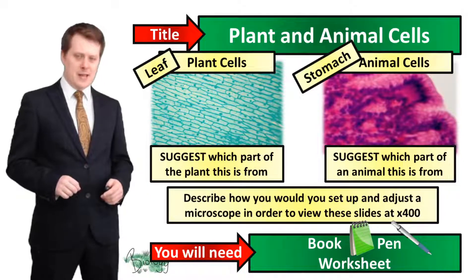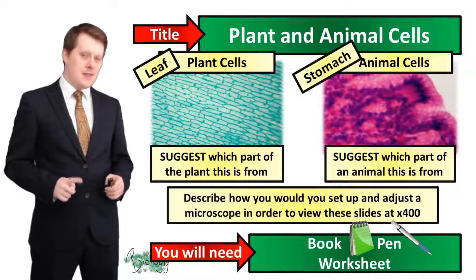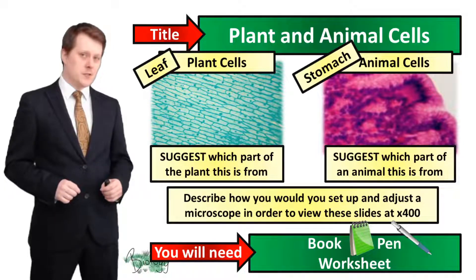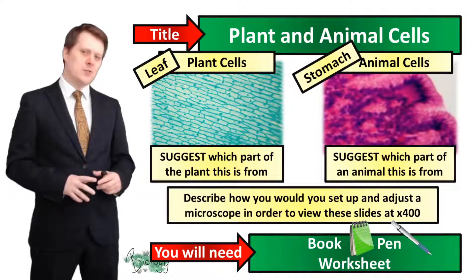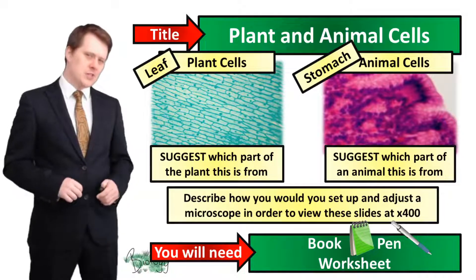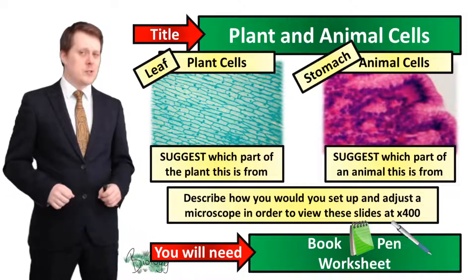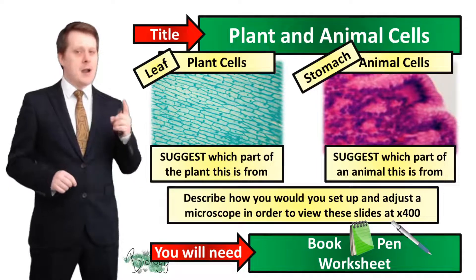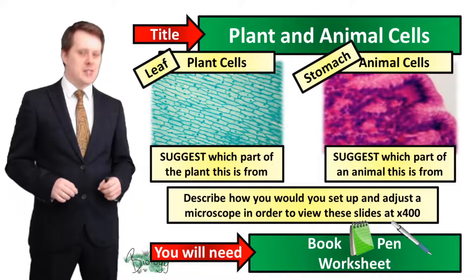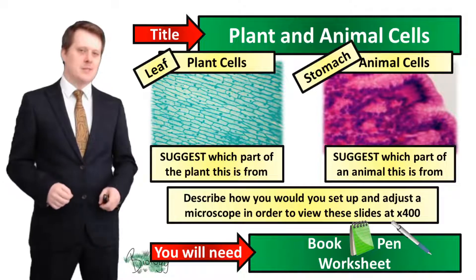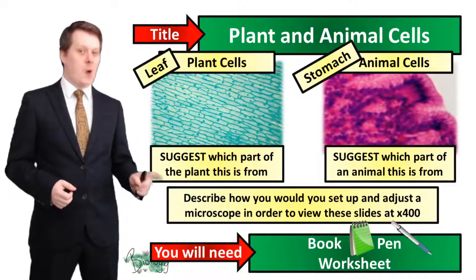You would then change your objective lens from your times 4 to your times 10 and then, while looking down the microscope, you would use the fine focus in order to bring that image into focus. Once that image is in focus you would then need to change your objective lens again to your times 40, and then while looking down the microscope you would use your fine focus again. Once you've focused that times 40 objective lens you should be at a total magnification of times 400, because the eyepiece lens will have a magnification of times 10. If we take that times 10 eyepiece and that times 40 objective lens and multiply them together we get our total magnification of times 400.